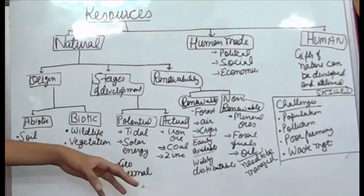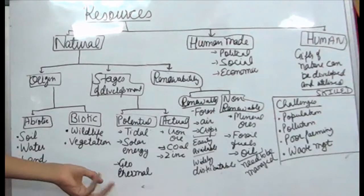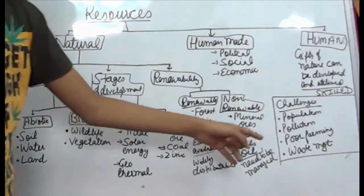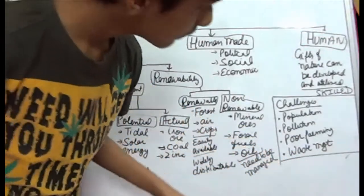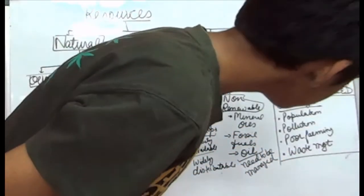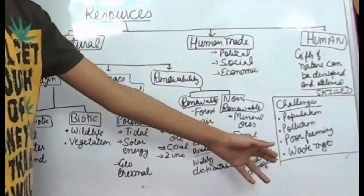If pollution is very large, then resources will not be able to be developed. Other challenges include poor farming and waste management.